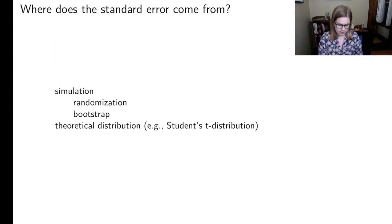And just a couple ideas about where the standard error comes from. One way you could do it is by simulation, so randomization or the bootstrap. And the other thing we could do is the theoretical distribution, like the student's t distribution. I'm not going to get into that right now, but just remember that there's different ways to come up with a standard error.